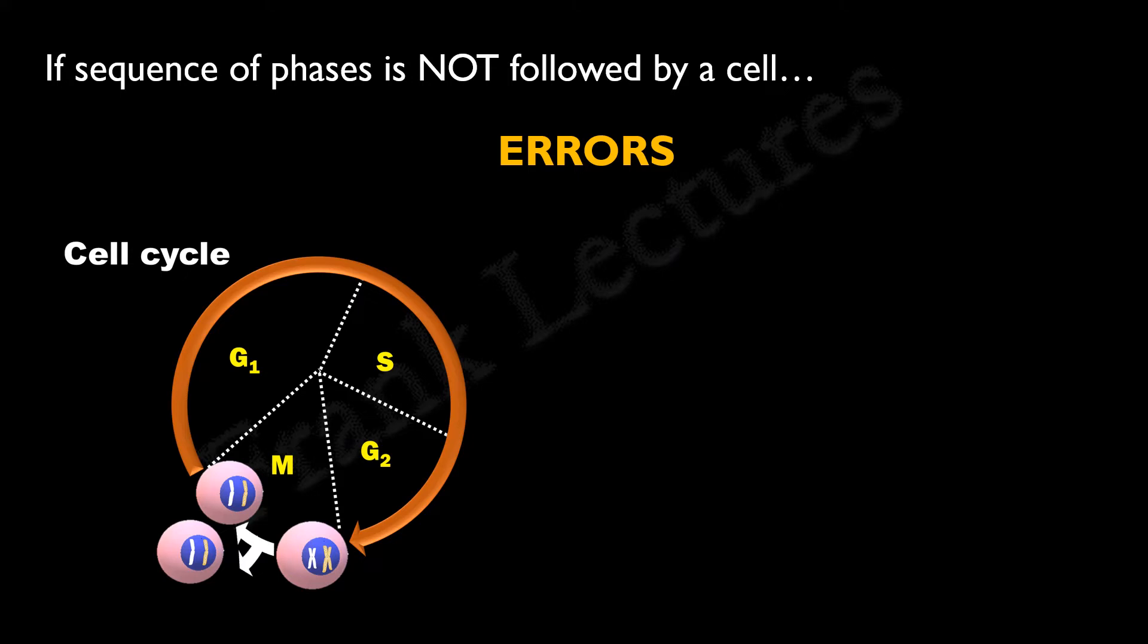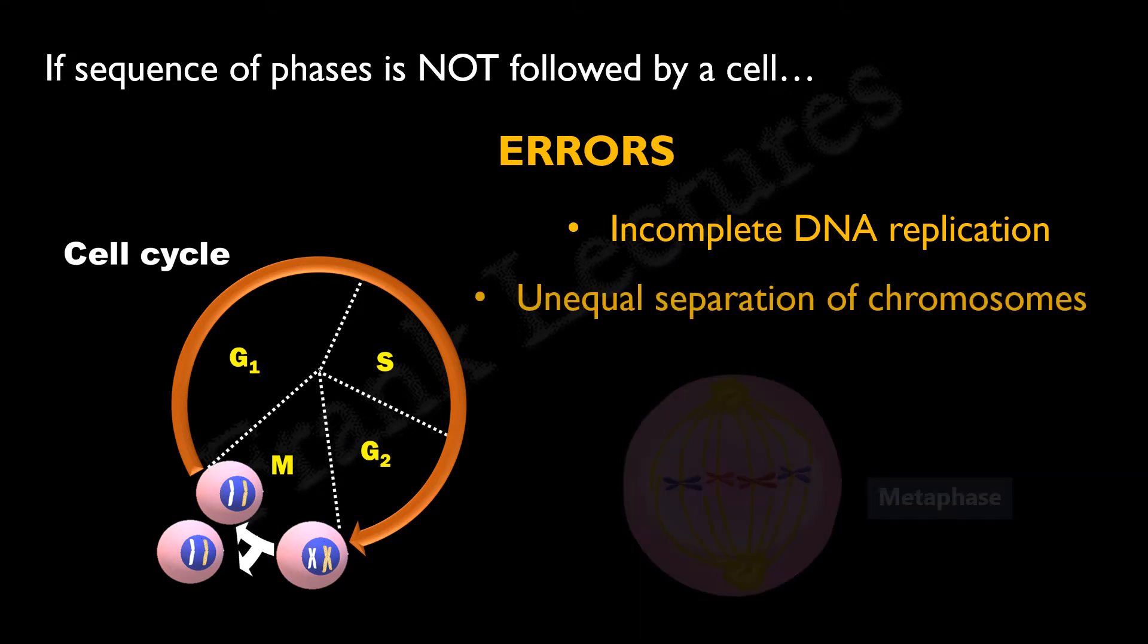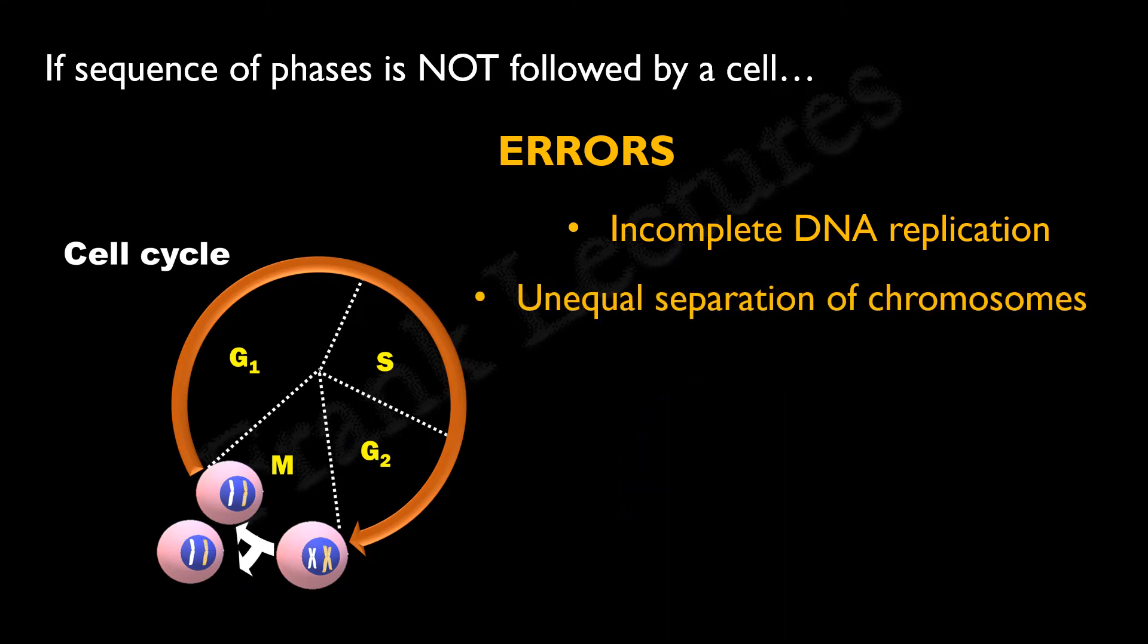Now, what kind of errors? Let's say a cell begins mitosis without completing the S phase. That means all chromosomes of a cell have not been completely copied. We also know that before moving toward the spindle poles during mitosis, the chromosomes are properly attached to the spindle so that each daughter cell receives an equal number of chromosomes. But if chromosomes move towards the spindle poles before their proper attachment, the distribution of chromosomes will not be equal. One cell may get less and another may get more chromosomes. Obviously, the cell does not want such errors to take place.